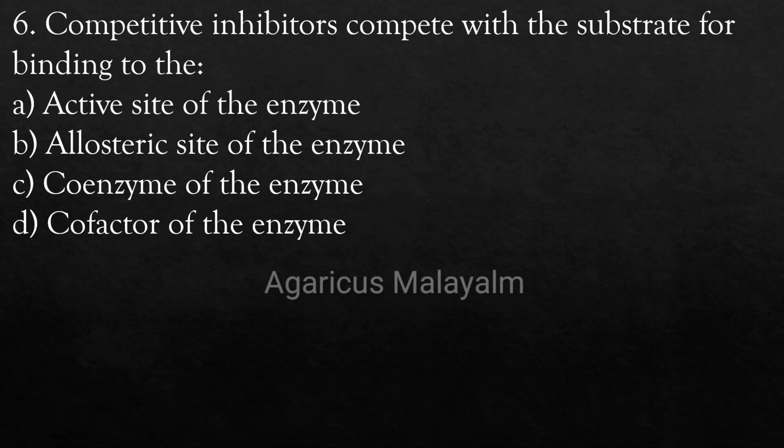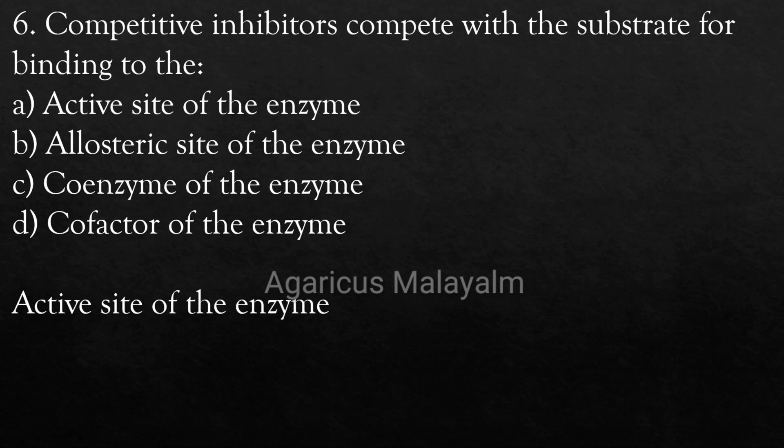Sixth Question: Competitive inhibitors compete with the substrate for binding to the? Option A: Active site of the enzyme. Option B: Allosteric site of the enzyme. Option C: Coenzyme of the enzyme. Option D: Co-factor of the enzyme. Correct Answer: Option A — Active site of the enzyme.